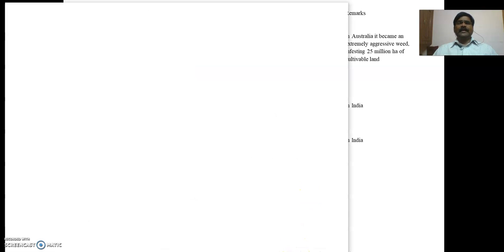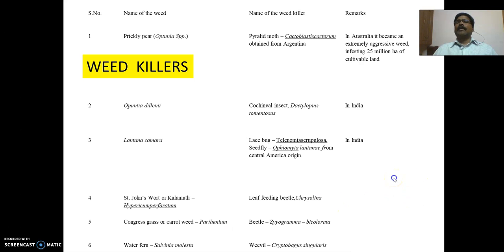For example, for water hyacinth, two types of weed killers can be employed: one is a weevil, Neochetina bruchi, and another is a mite, Orthogalumna terebrantis. Similarly, in the case of Lantana camara, three types of weed killers can be employed: one is a lace bug, another is Chelone thyrsiflora.